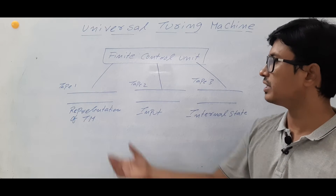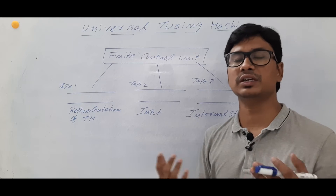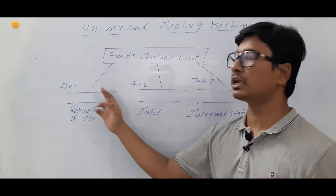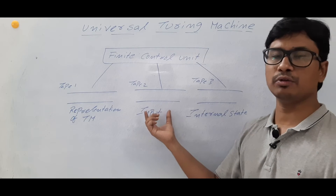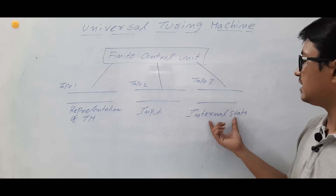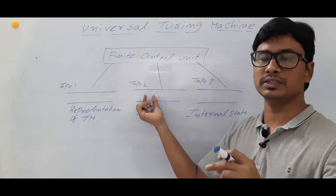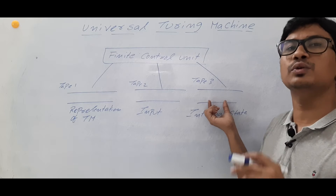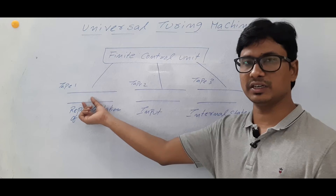A Universal Turing Machine consists of a finite control unit and three tapes. Suppose you have designed a Turing Machine for performing unary addition — that Turing Machine you will represent in tape one. The input for that Turing Machine, like the input for unary addition, you will store in tape two. And the internal state — suppose you are in state Q0 — you will store in tape three.